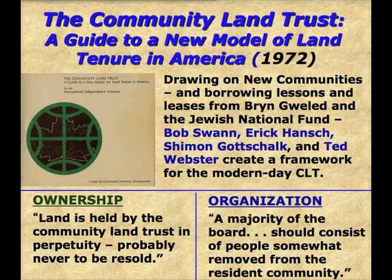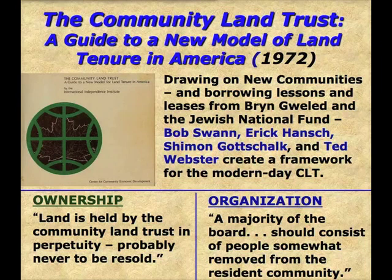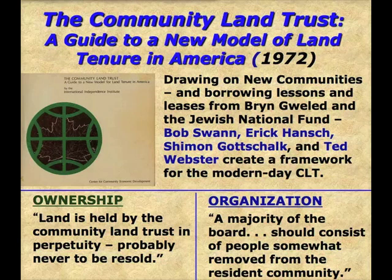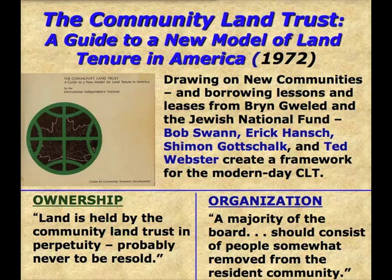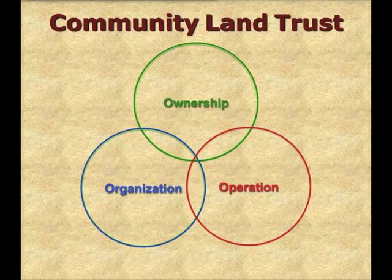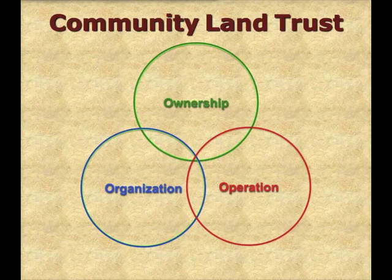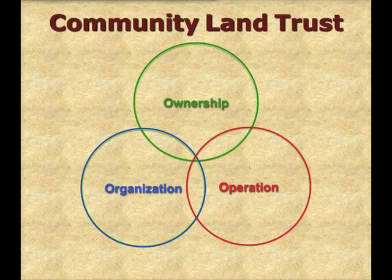The story of New Communities became the basis for the first book about CLTs, published in 1972. The authors confessed that the model they described existed only in prototype, yet they spelled out the key components of ownership and organization that characterize CLTs today. In particular, they drew upon the experiences of Koinonia Farm, the Albany Movement, and the civil rights struggle to argue that a radical innovation like the CLT was going to need a base of support much broader than the people living on the land if it was going to succeed. By 1972, therefore, two of the three components of the classic CLT had been put in place, at least conceptually. It would be another decade, however, before they were fully realized in a new generation of CLTs that added operational features all their own. We'll take up that story in the next chapter.